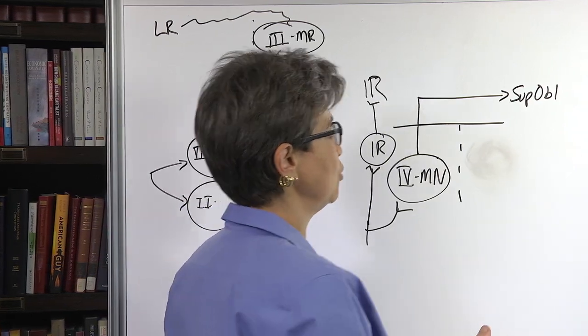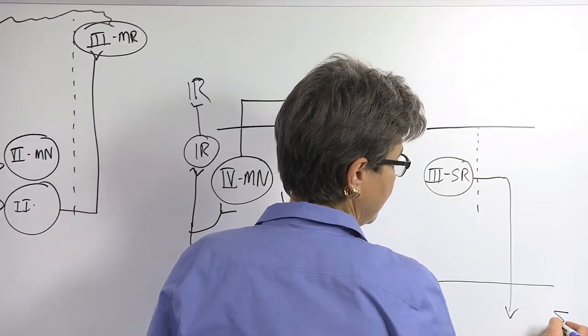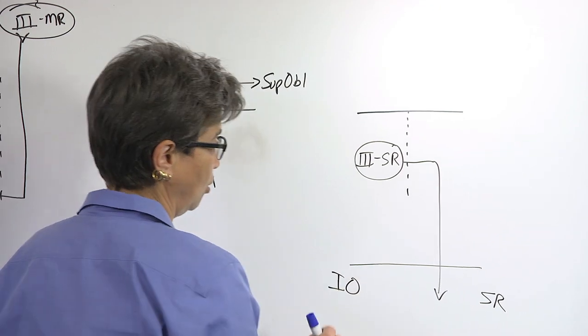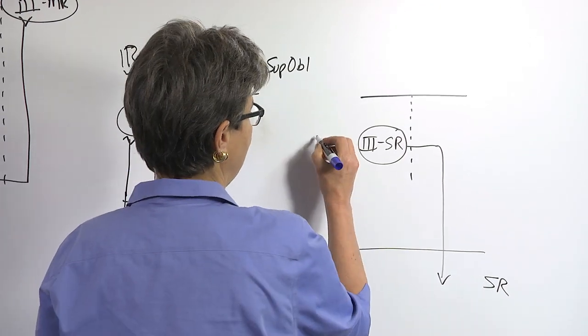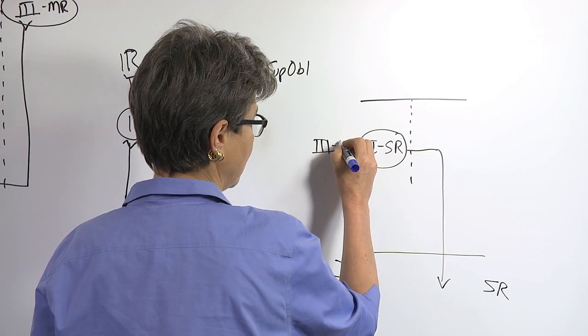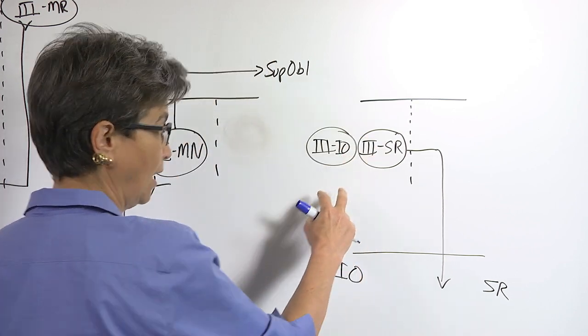There's another way that yokes this superior rectus on this side to the inferior oblique on the same side. And that is that the ocular motor neurons that go to the inferior oblique are sitting with the ocular motor neurons...